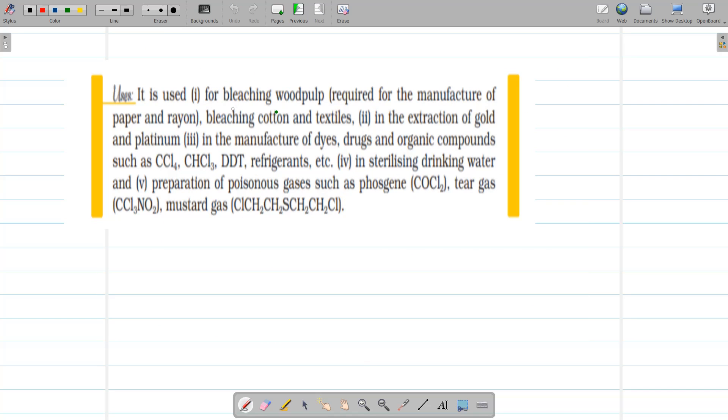Now, is its uses. It has bleaching action. So it is used for bleaching wood pulp and manufacture of paper and rayon. And it is bleaching cotton and textiles. It also helps in extraction of gold and platinum. And it is used in the manufacture of dyes, drugs, and organic compounds such as CCl4, CHCl3, DDT, refrigerants that is freons. Then, in sterilizing water again due to its oxidizing nature. Then, preparation of poisonous gases such as phosgene, tear gas, and mustard gas.